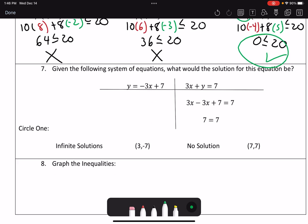Number 7 says, given the following system of equations, what would the solution for this be? So if I'm looking at this here, I've got 7 equals 7. 7 always equals 7, so this is going to be an infinite amount of solutions.